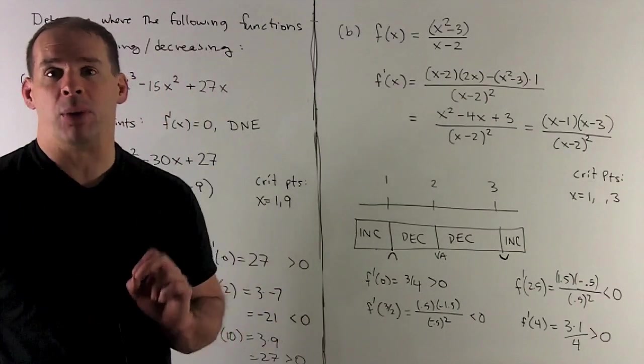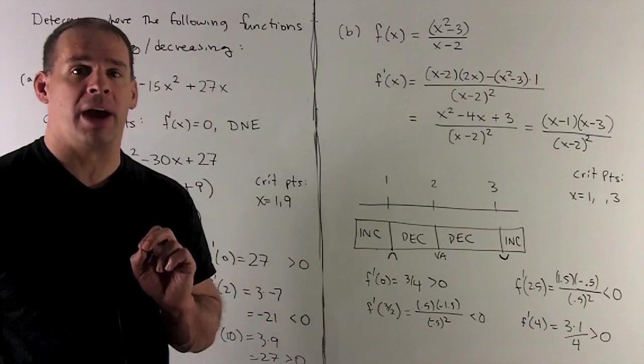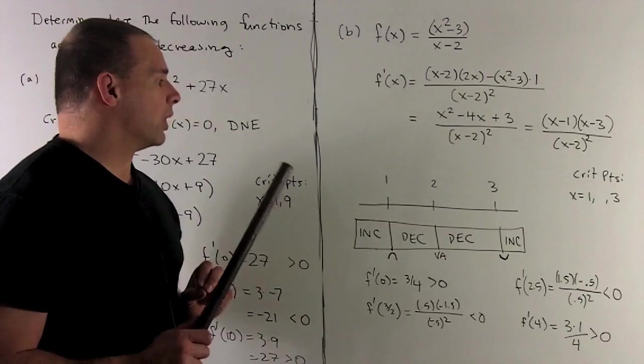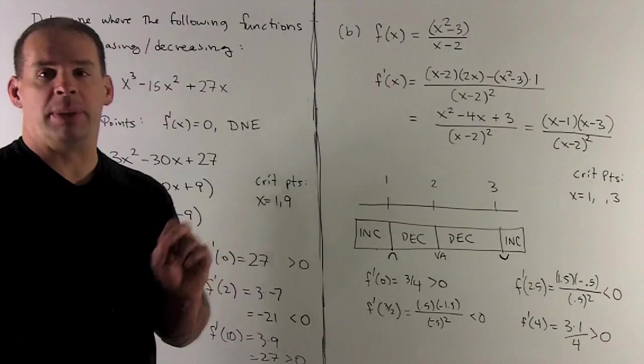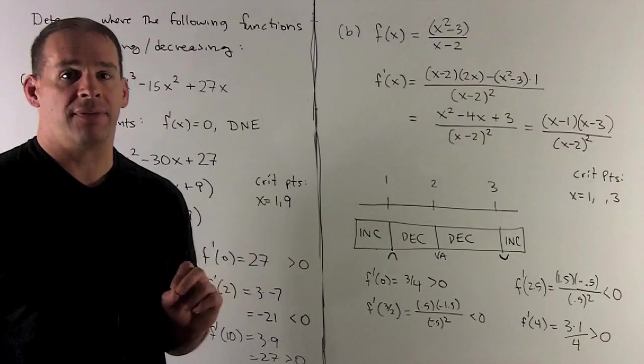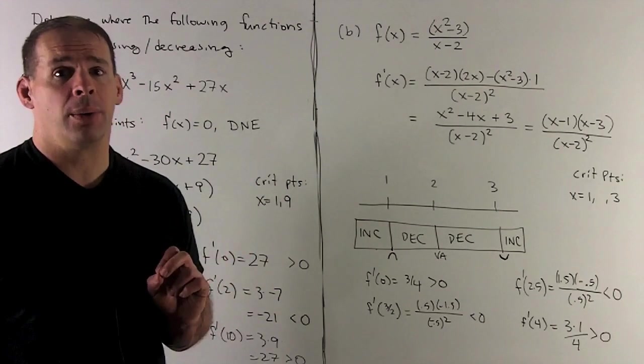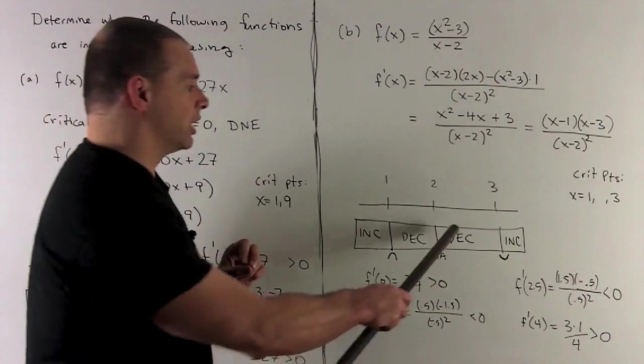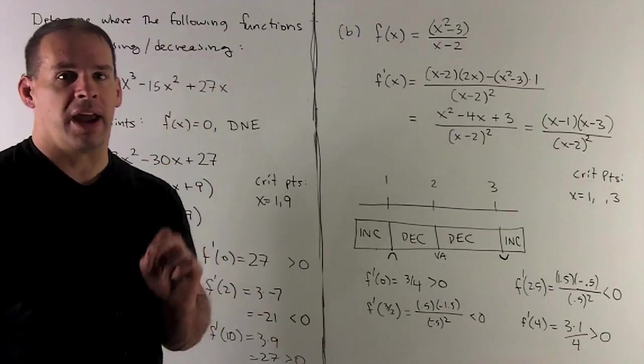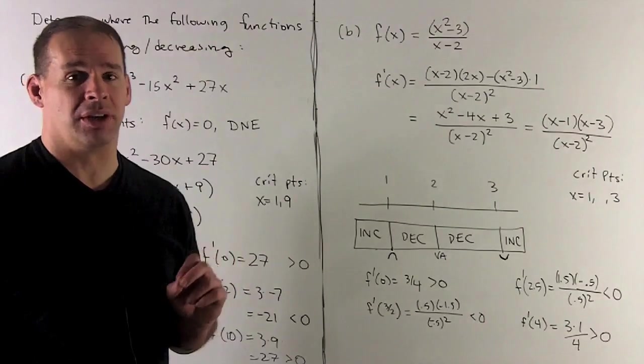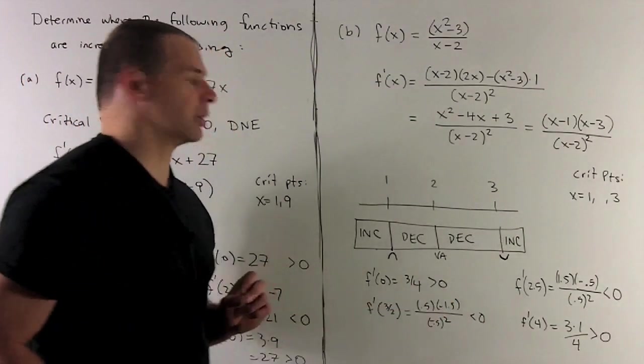Also note, I'm not too worried about what the actual number is. All I care about is the sign. All right, we go with 2½. So that's going to be in the top, 1½ times minus ½. So we're negative there also. So that's going to be decreasing in this region. And then once I put a 4 in there, the top's just going to be 3 times 1, which is positive. So increasing on this region.